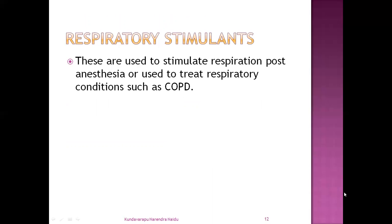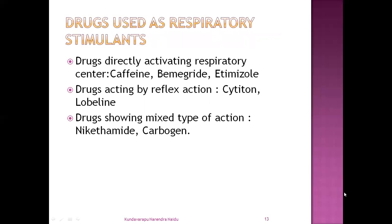Next: respiratory stimulants. They are used to stimulate respiration — mainly post-anesthesia, when patients have taken anesthesia, these are used to regain respiration. They are also used to treat respiratory conditions such as chronic obstructive pulmonary disease. The drugs used as respiratory stimulants are in three classes: drugs which directly activate the respiratory center — caffeine, bemegride, and picrotoxin; drugs which act by reflex action — cytisine and lobeline; and drugs which show a mixed type of action — nikethamide and carbogen.